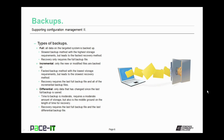The middle ground is the differential backup. Only data that has changed since the last full backup is saved. The time to backup is moderate, and it requires a moderate amount of storage, but it is also the middle ground on the length of time for recovery. The recovery process requires the last full backup file and the last differential backup file.